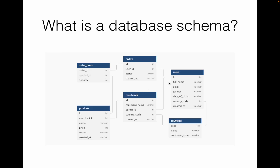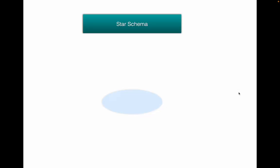Now let's talk specifically about star schema. Star schema is really easy to understand. If you recall our previous video on facts and dimensions, we talked about the center transactions table. Think about a table which holds transactions on, say, Amazon — it would have a transaction ID as the primary key and then a product ID so you know what product is being bought.